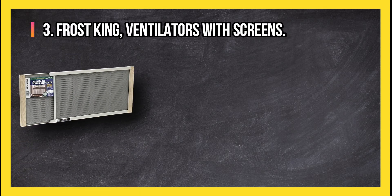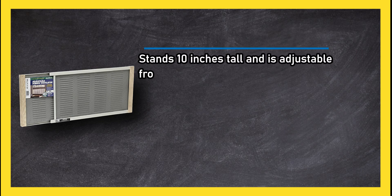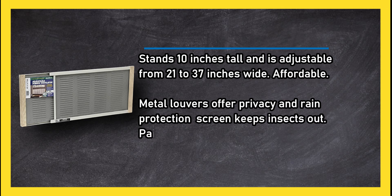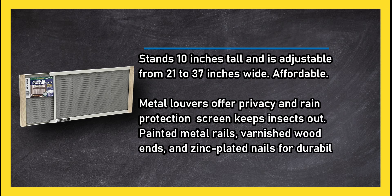At number three, Frost King Ventilators with Screens. Stands 10 inches tall and is adjustable from 21 to 37 inches wide. Affordable. Metal louvers offer privacy and rain protection. Screen keeps insects out. Painted metal rails, varnished wood ends, and zinc plated nails for durability.